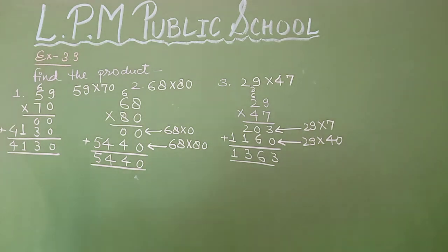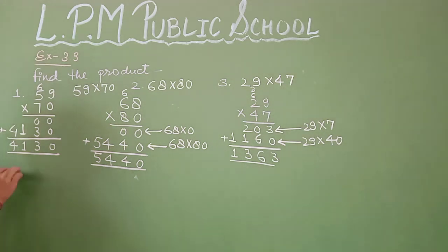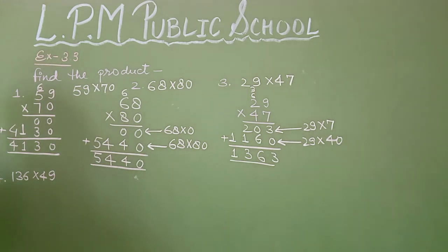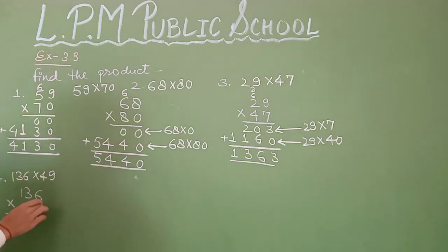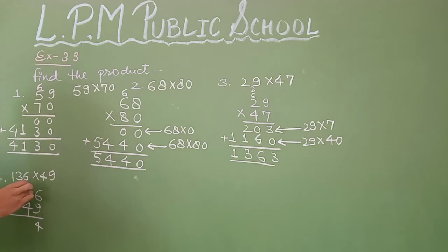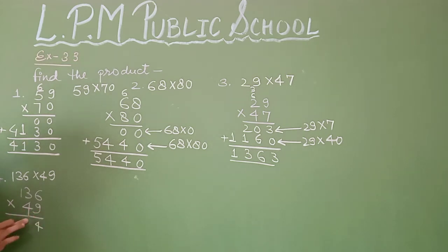Next is question number 4: 136 × 49. Firstly we multiply the ones: 9 × 6 = 54, write 4, carry 5. Then 9 × 3 = 27 plus 5 = 32, write 2, carry 3. Then 9 × 1 = 9 plus 3 = 12. That gives 1,224 — that is 136 multiplied by 9 ones.